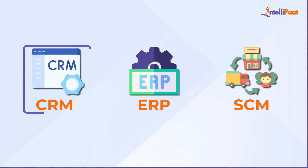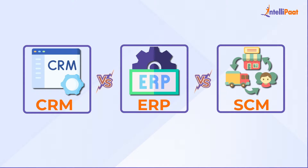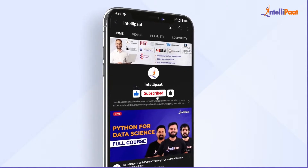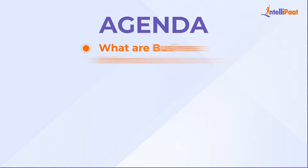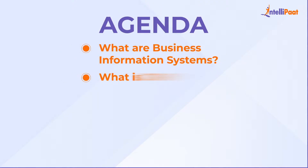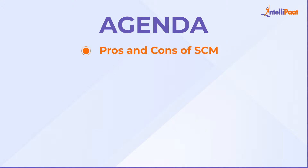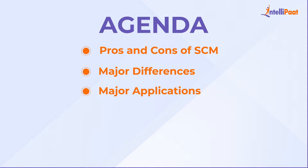Today's agenda covers: what are business information systems, what is CRM and its pros and cons, what is ERP and its pros and cons, what is SCM and its pros and cons, the major differences, major applications, and finally a quick recap of the entire session.